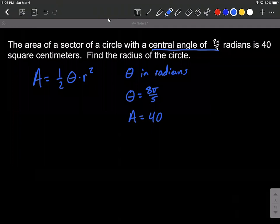Let's fill that information into our formula and see what we're left with and how to solve for it. So in this case, we can say our area is going to be 40 equals one-half times 8π over 5 goes in for our radians for our theta times r squared.